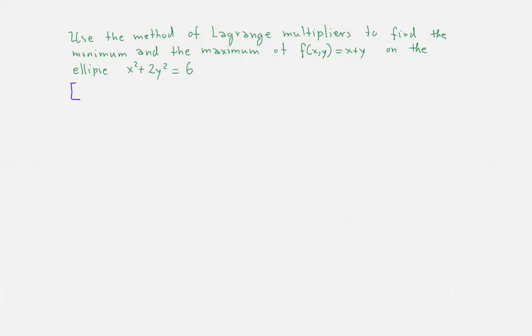Okay, so we would like to use the method of Lagrange multipliers in order to find the minimum and the maximum of the function x plus y on the ellipse x squared plus 2y squared equals 6.